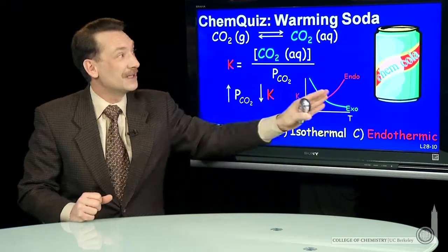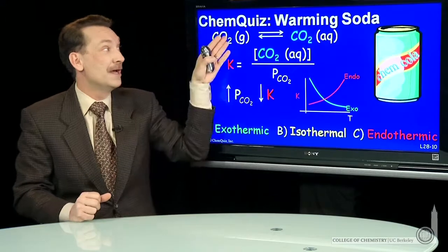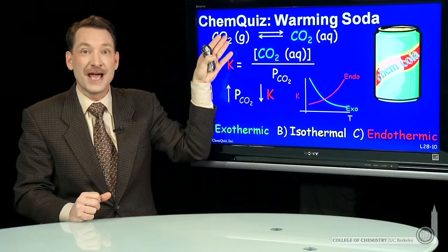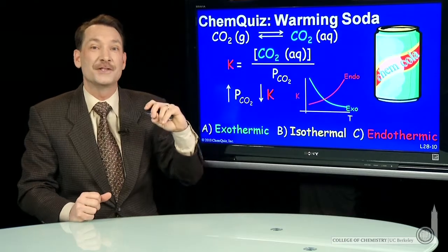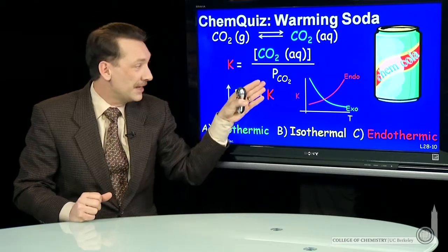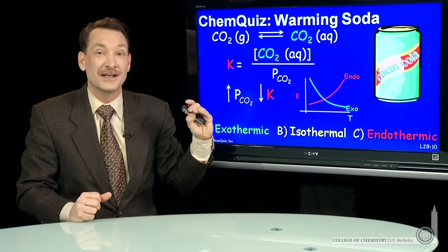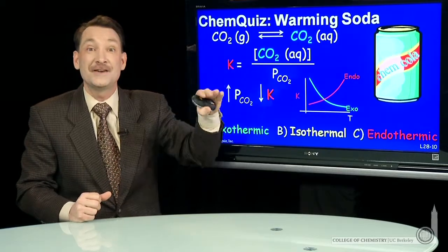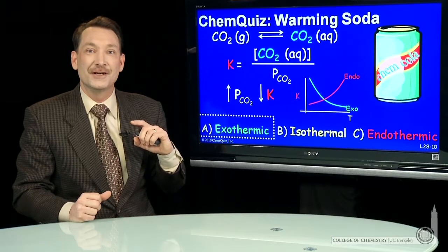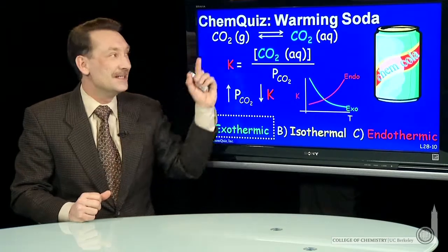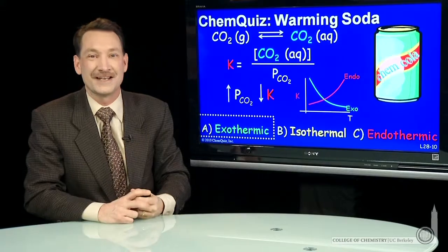So two ways to think of this. A Le Chatelier's principle, where we shift the reaction with respect to the increased heat. Exothermic, I shift back towards reactants. Or K, the value is changing. They're actually the same thing. A different way to look at the same thing and either way arrive at the same answer. This is an exothermic dissolution of carbon dioxide gas.